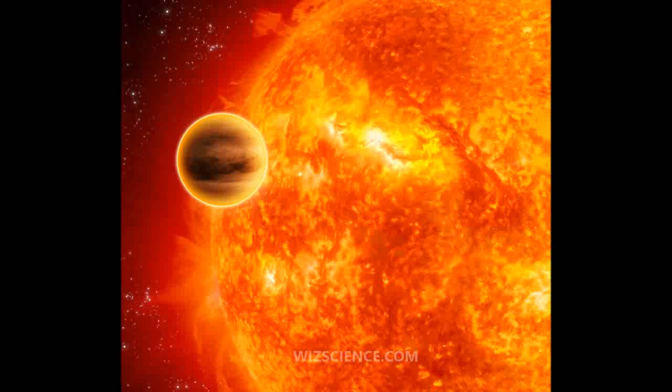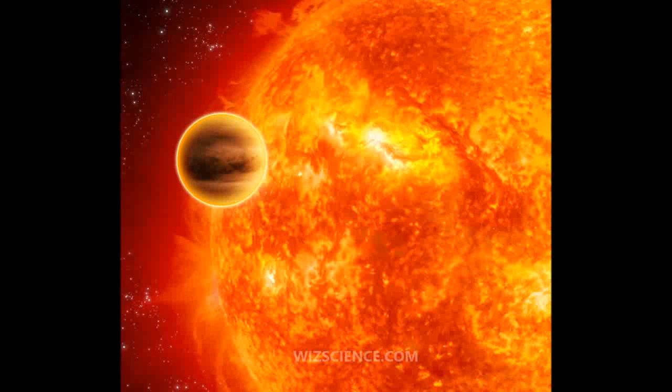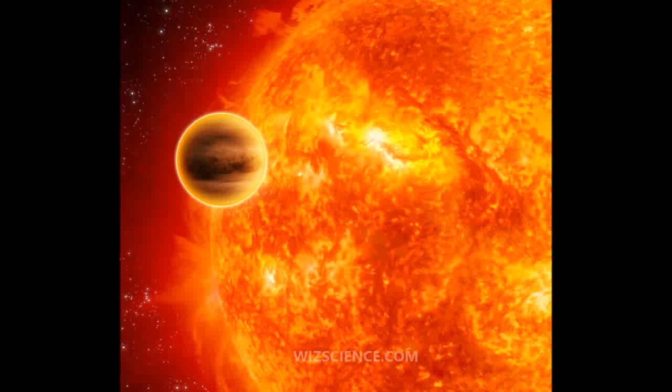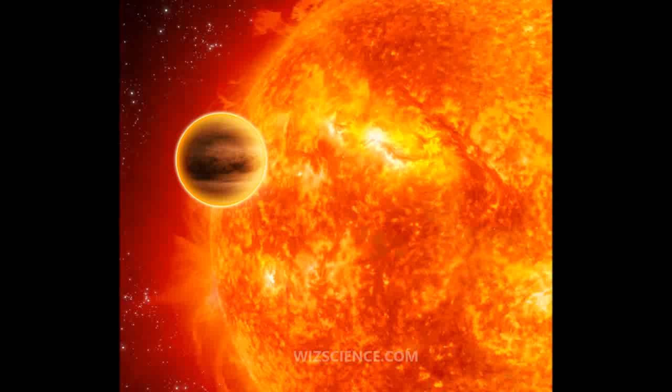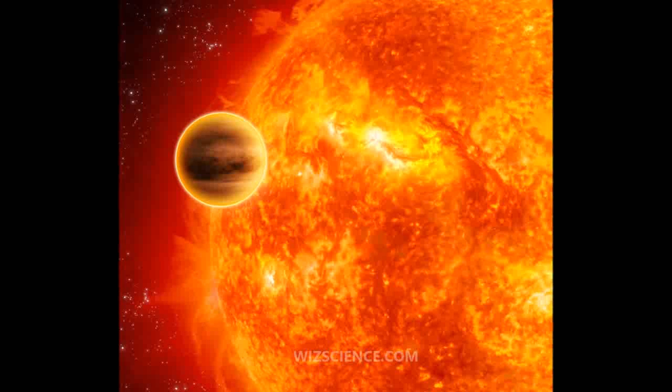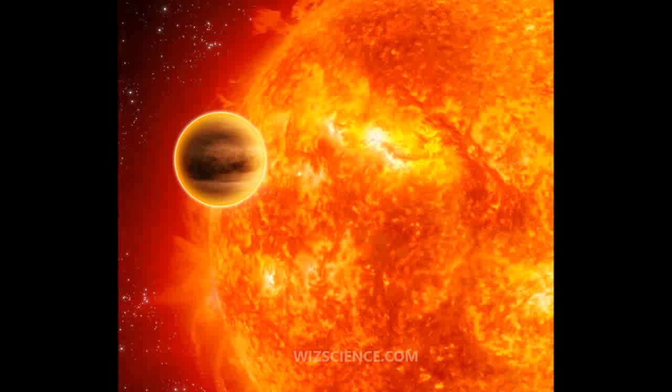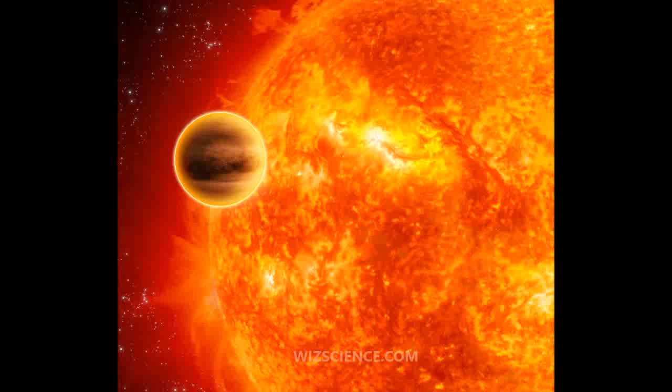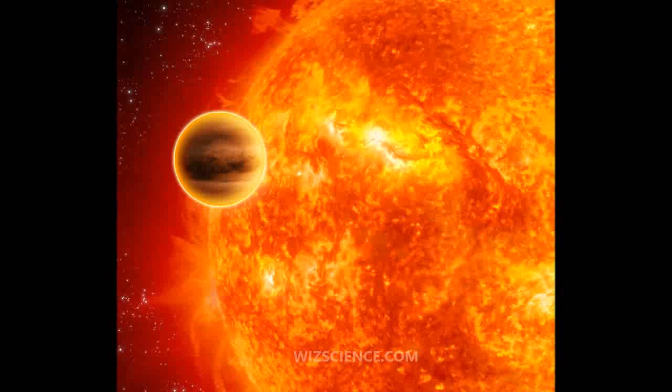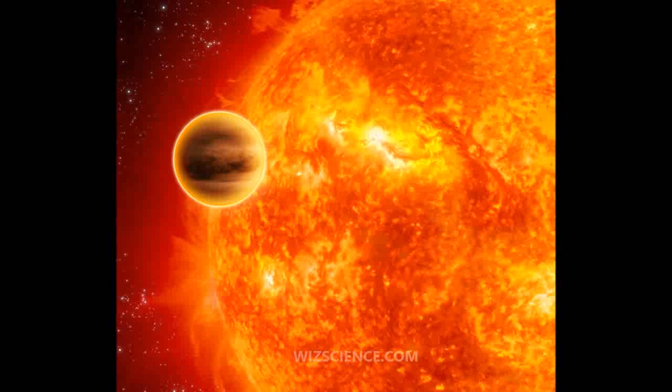HD 189733 A has one known planet designated HD 189733 b, a gaseous giant 13% larger than Jupiter, close enough to complete an orbit every two days. Using spectrometry, it was found in 2007 that this planet contains significant amounts of water vapor.